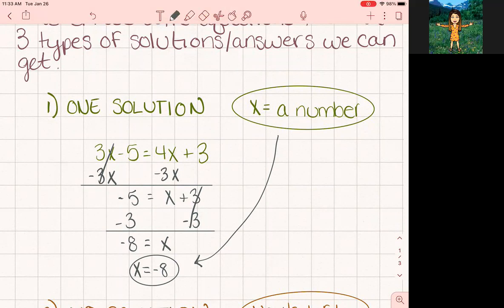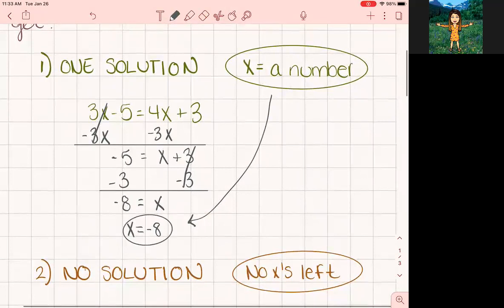The next possibility is that there could be no solution, meaning that there is no number out there that x can be equal to that will make this equation true. We've dealt with this before. What it looks like when you're done, when you've done all your solving steps,